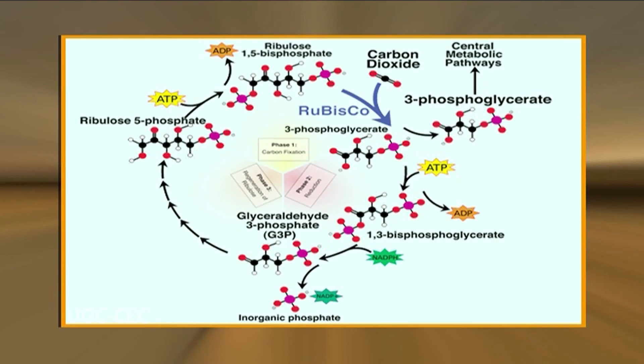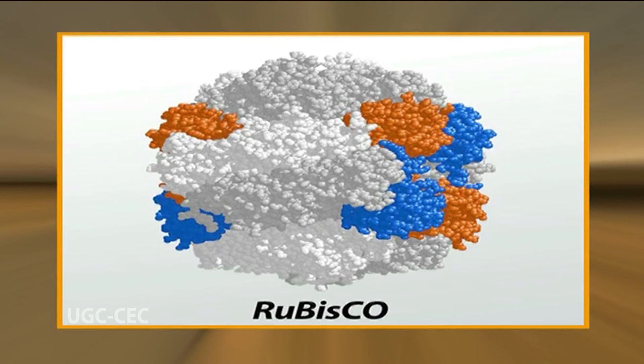Rubisco is the critical enzyme that catalyzes the addition of carbon dioxide to ribulose-1,5-bisphosphate during the Calvin cycle. Not only is it the major protein component of the chloroplast stroma, but it is also thought to be the single most abundant protein on Earth. It is noteworthy that one of its subunits is encoded by the chloroplast genome. This brings us to the end of the lecture. Hope you have enjoyed and understood. Thank you and goodbye.